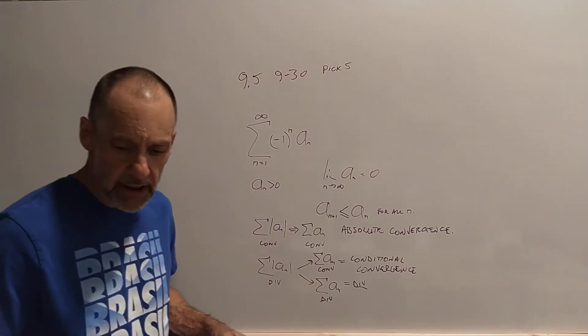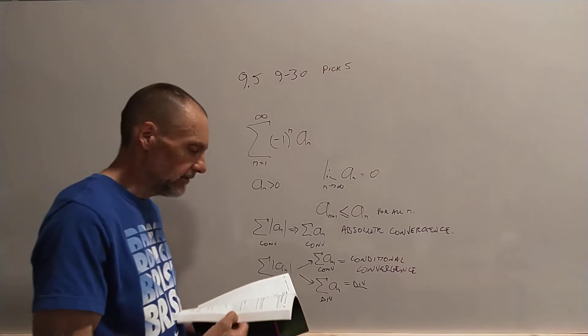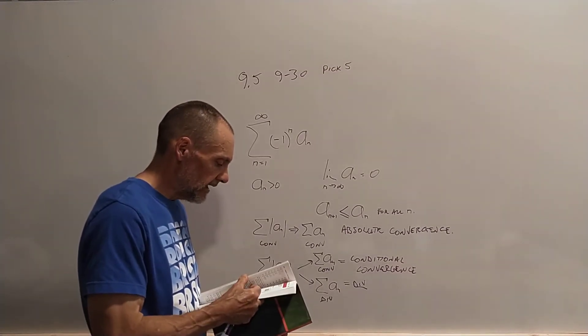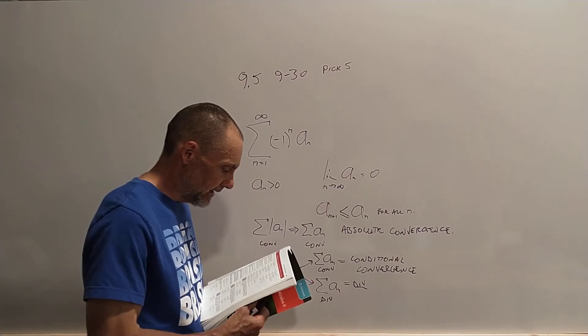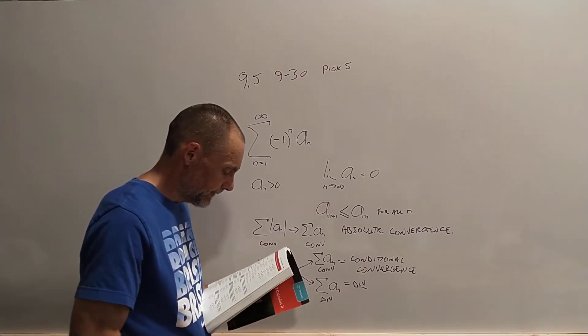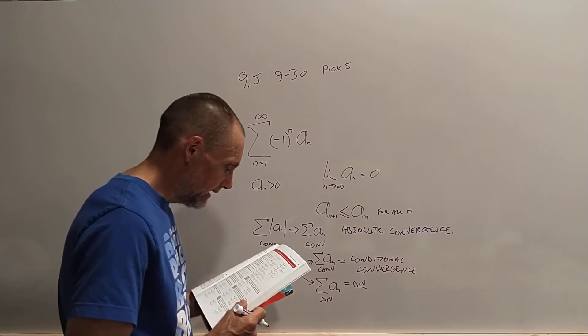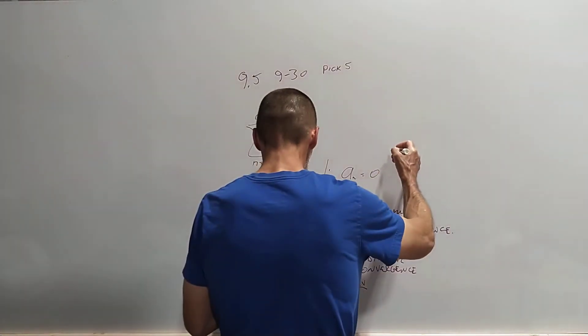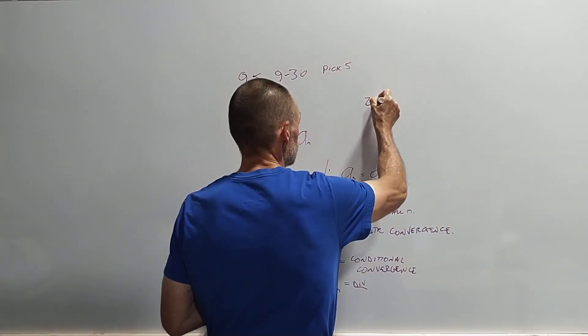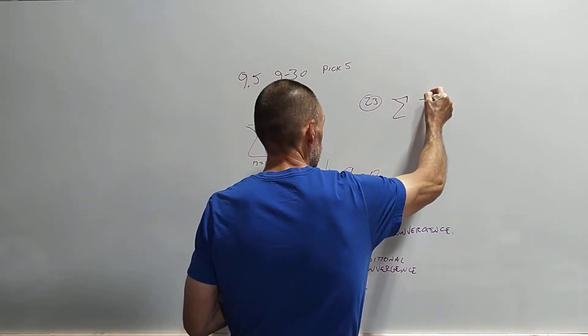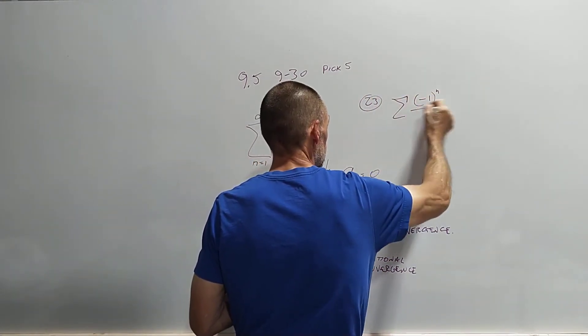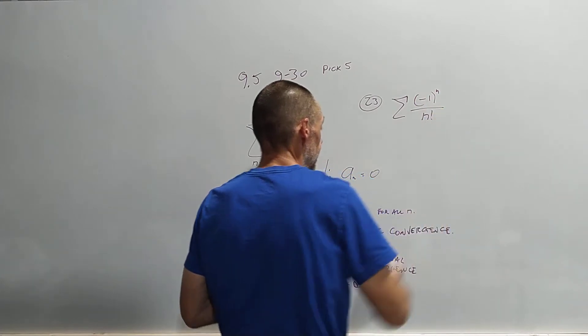So maybe we can pick a couple of problems. We have a little bit of time here, and we can try a couple of them. Here's one. Let's try this. This is number 23. And it is negative 1 to the n over n factorial.